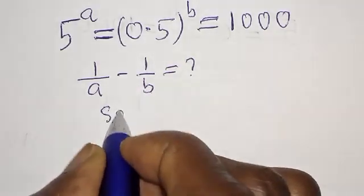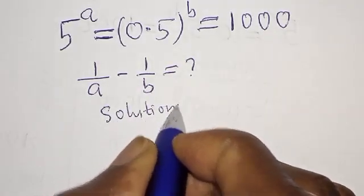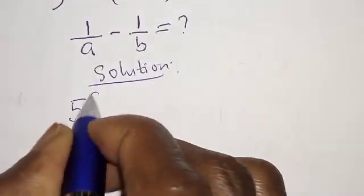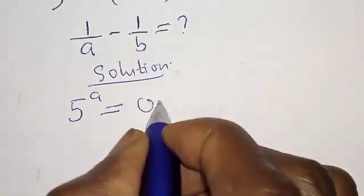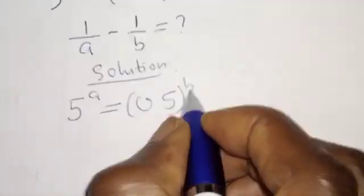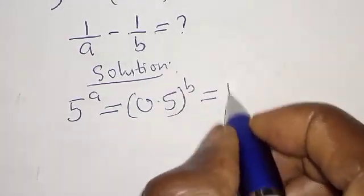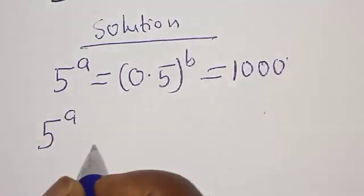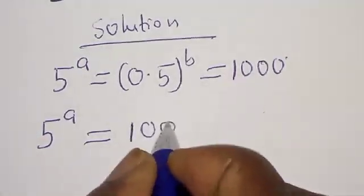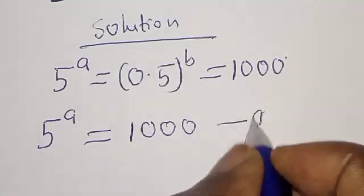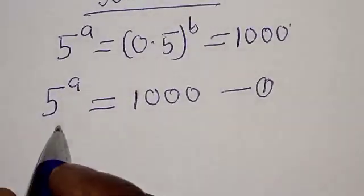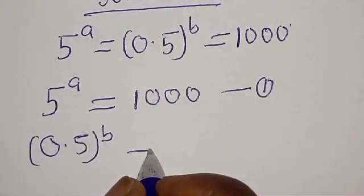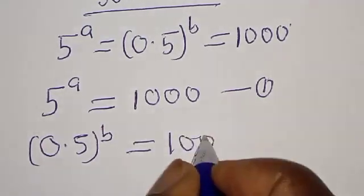Solution. We have the given equation: 5 raised to power a is equal to 0.5 raised to power b is equal to 1000. Then, 5 raised to power a is equal to 1000 — let's call this equation 1. Also, 0.5 raised to power b is equal to 1000 — let's call this equation 2.